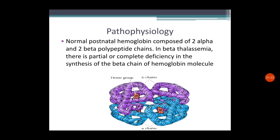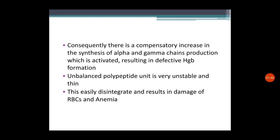In the picture you can see the appearance: the heme group is situated in the center of the globin chains. Four heme groups are present in the four globin chains — two alpha and two beta — giving the appearance of the hemoglobin structure. As a result of this partial or complete absence of the beta chain, there are downstream consequences.